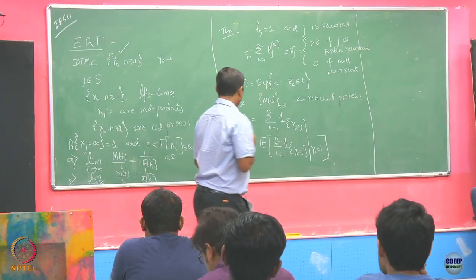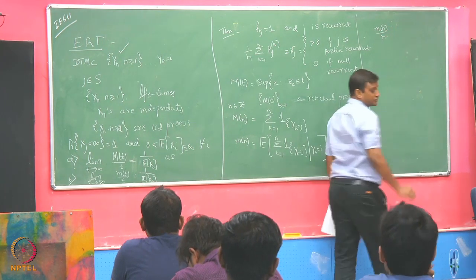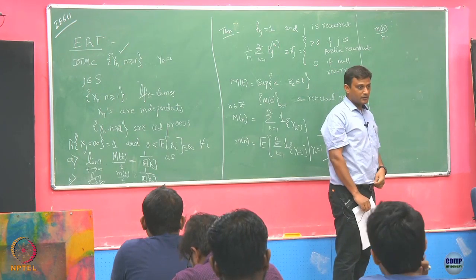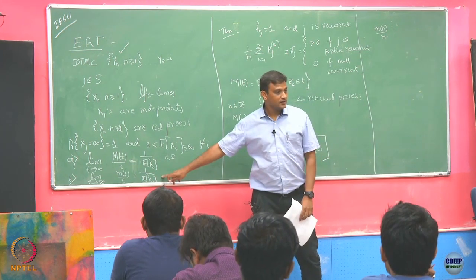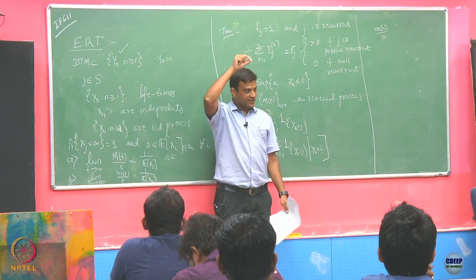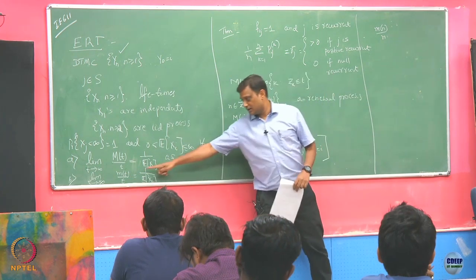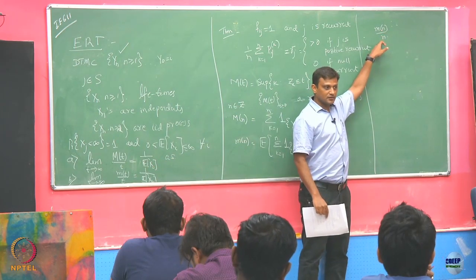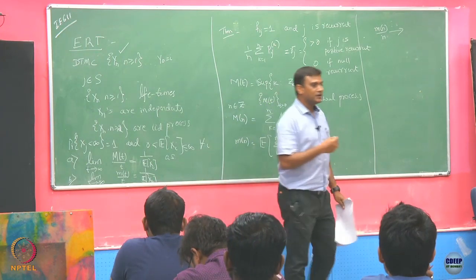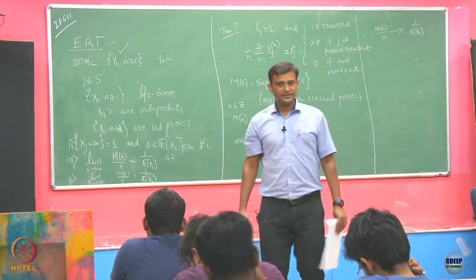Now, let us look at the average of this quantity: m(n)/n as n goes to infinity. As n goes to infinity, what do you expect m(n)/n to go to? Is it going to be the same limit as m(t)/t? All I am doing is, instead of looking at t at all possible values, I am only looking at t taking integer values. The limit taking only integer values is going to be the same limit — it has to be 1 by expectation of X_2.